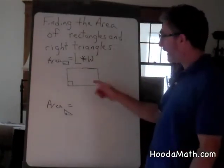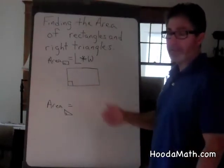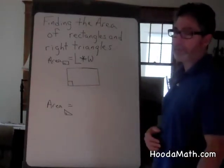In a rectangle, opposite sides are equal. And each of the angles in a rectangle is a 90 degree angle.